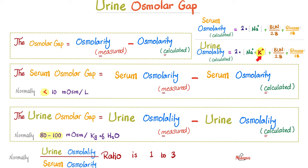One of the main functions of your kidney is to regulate potassium. If you're taking a diuretic like a loop diuretic or thiazide, you will have tons of potassium in the urine. So the only difference between the serum and urine osmolality equations is whether potassium is included or not.